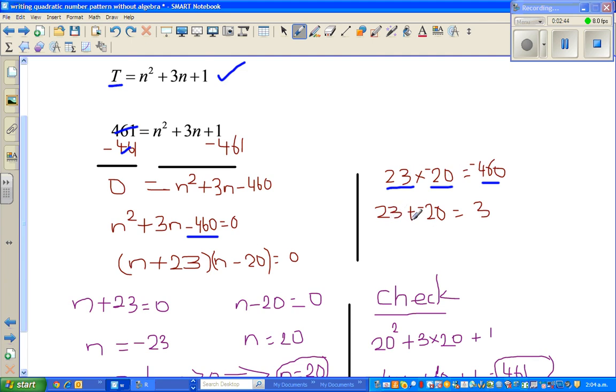If I add them, 23 plus negative 20 gives me 3. So the factors would be N plus 23 and the second factor would be N minus 20.